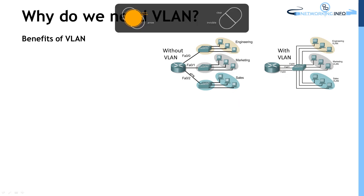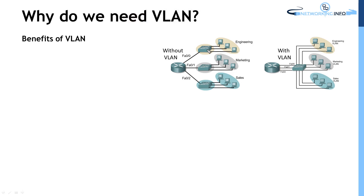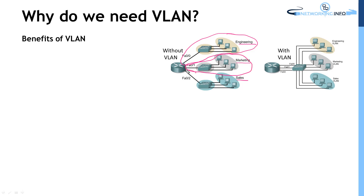Without VLAN, you have three switches — one for the engineering department, one for marketing, and one for sales. There are three broadcast domains separated by a router, requiring three separate switches and a router to make them secure.